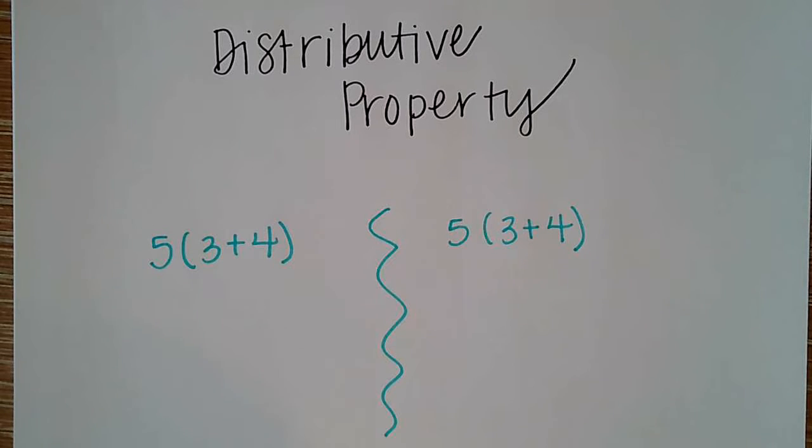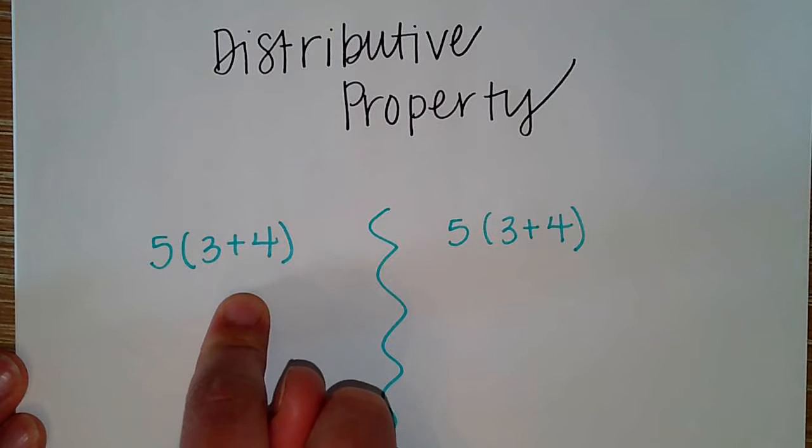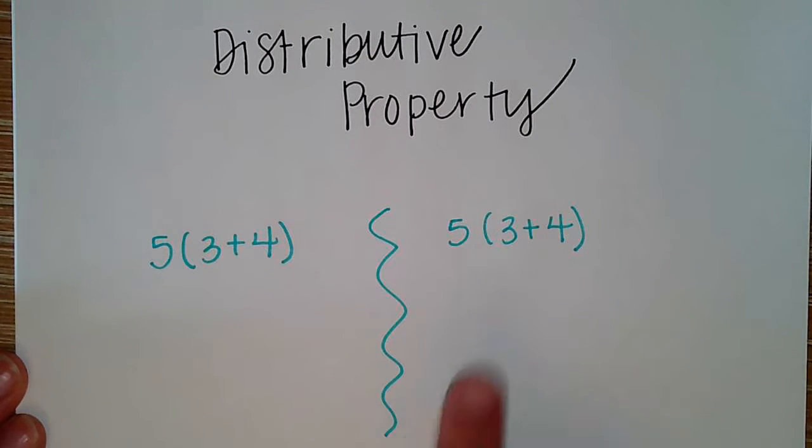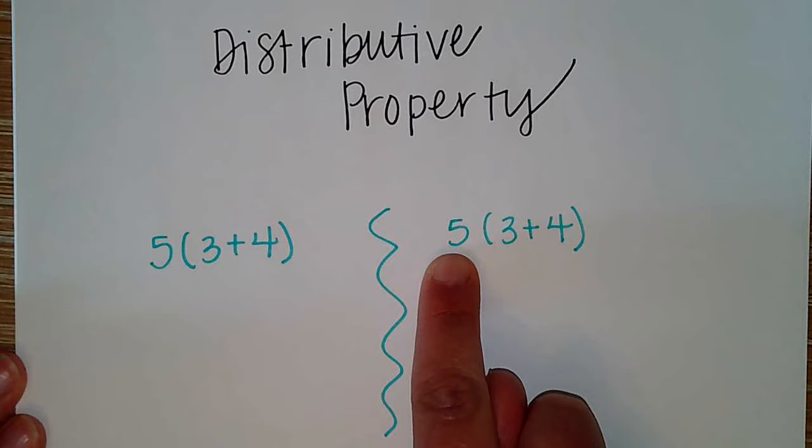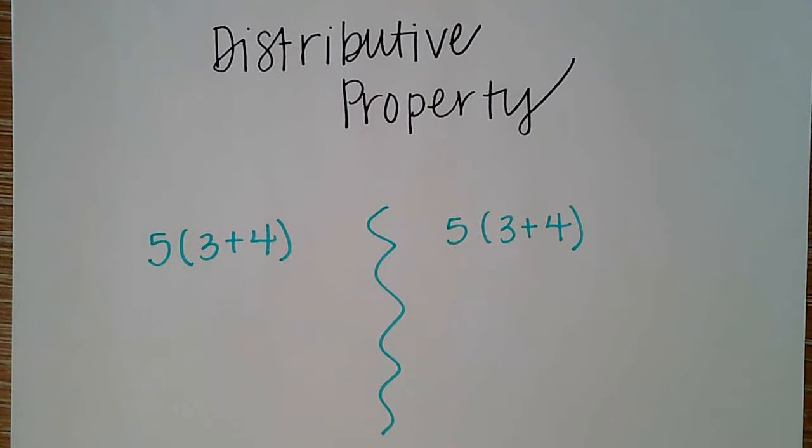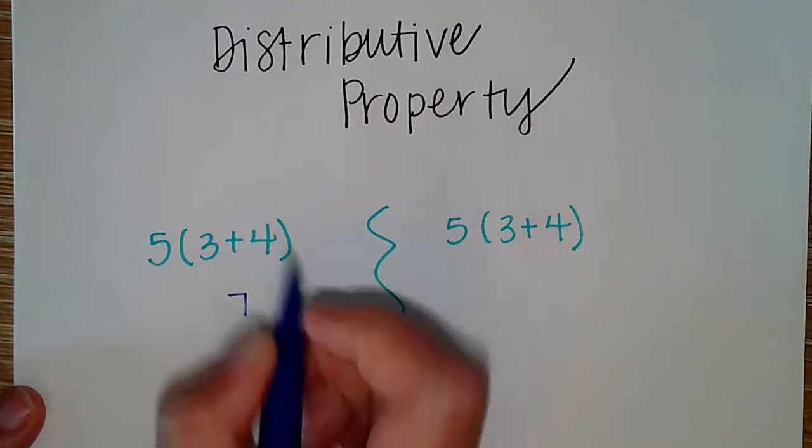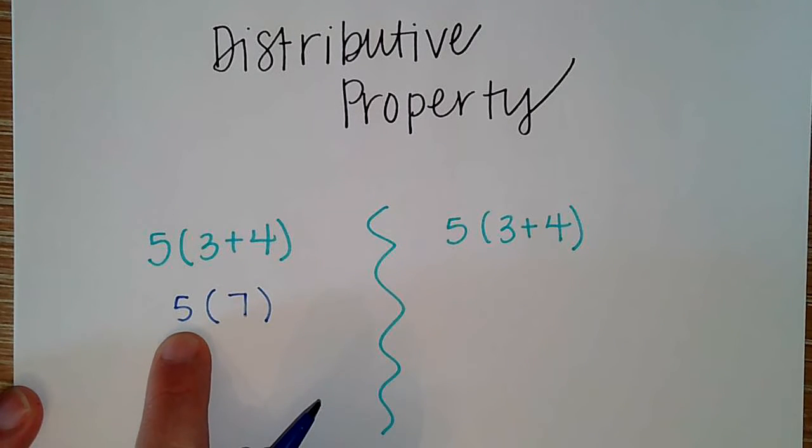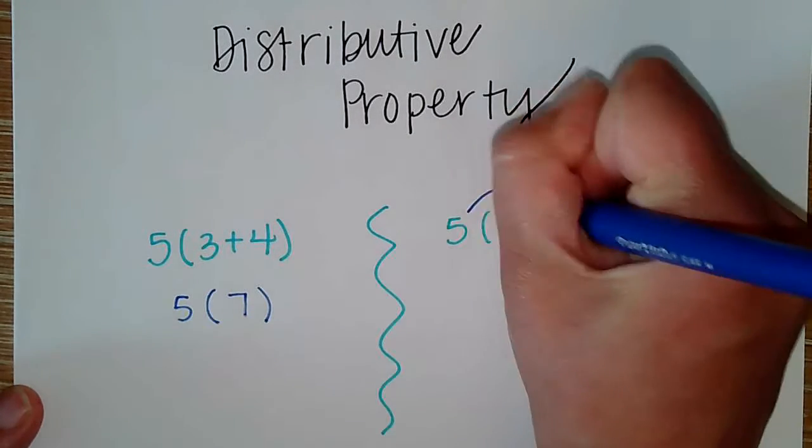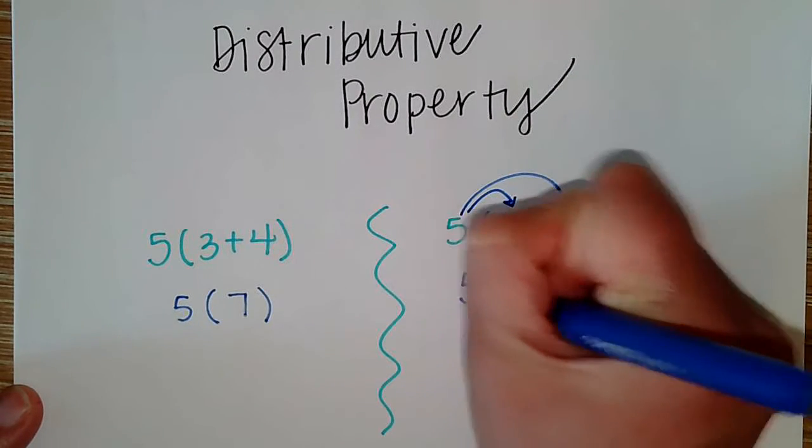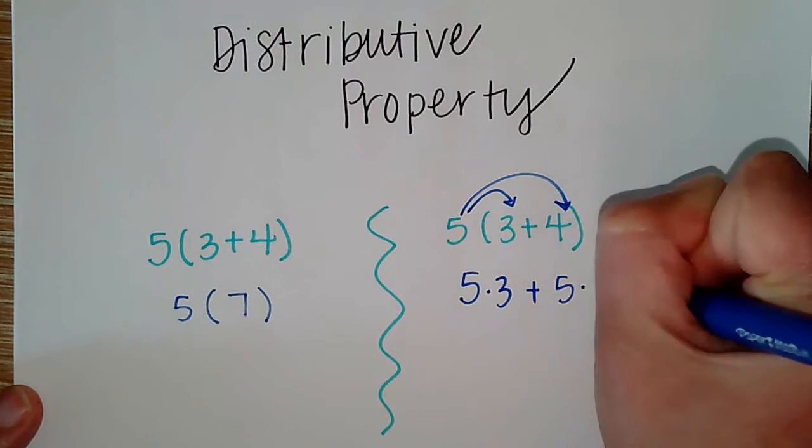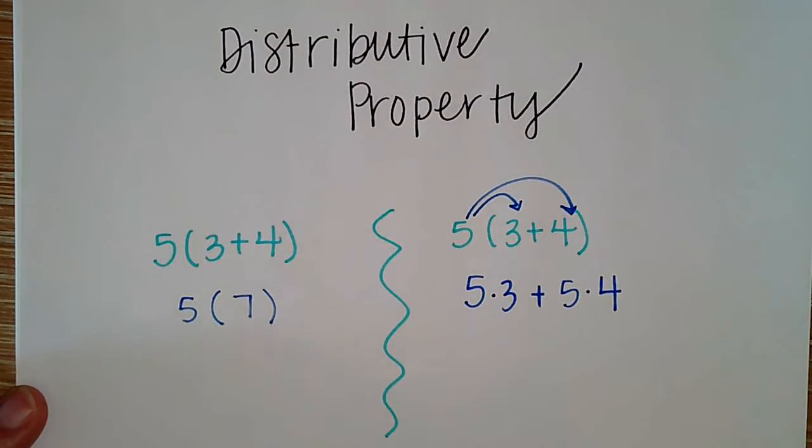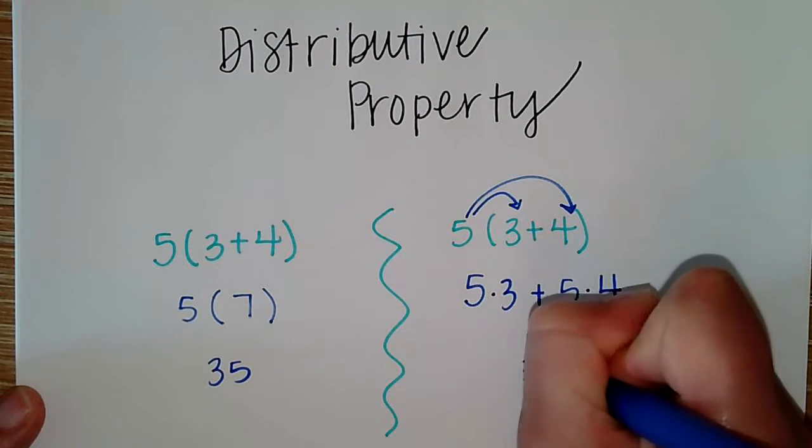I can do this in two different ways. I can either simplify that group first or I can distribute that 5 to each part of the group. I should get the same answer either way, whether I simplify the group first and then multiply to the factor outside, or I distribute to get the same answer.